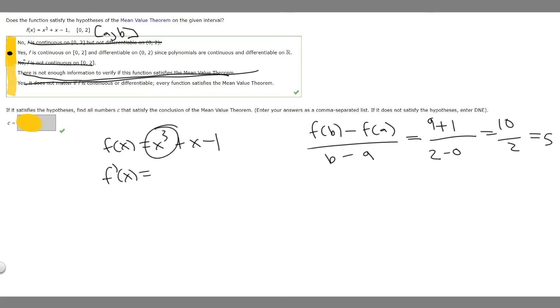So the derivative of x cubed, we move the 3 down and we subtract 1 from this, so it's going to become 3x squared. The derivative of just x is just going to be 1, and then the derivative of minus 1 is 0, we don't need to write that. So what we want to do is take this and set it equal to the value we just found, so 5.